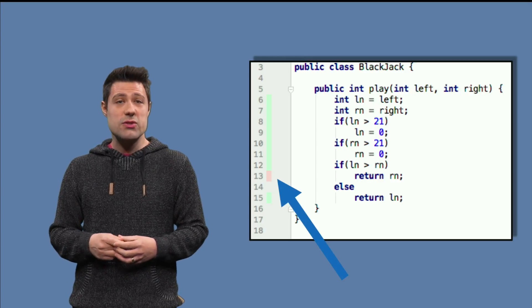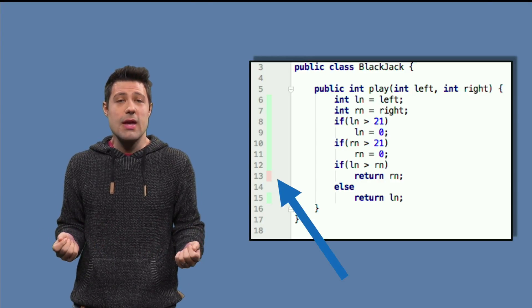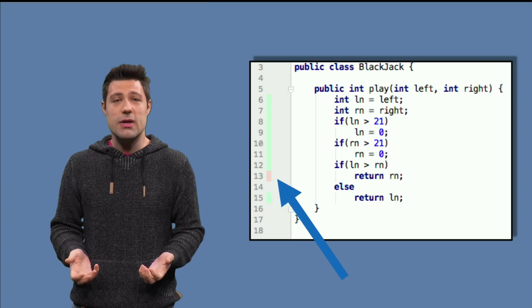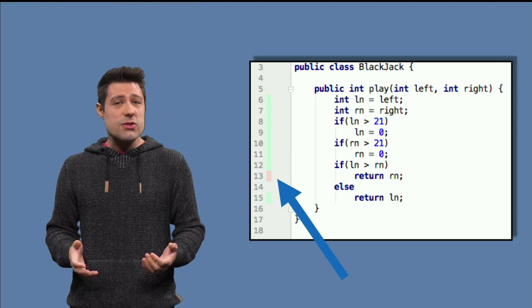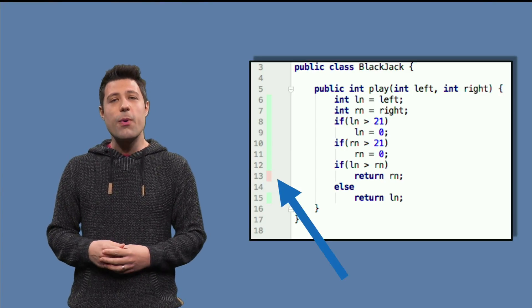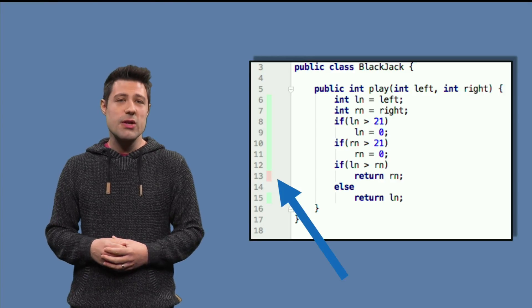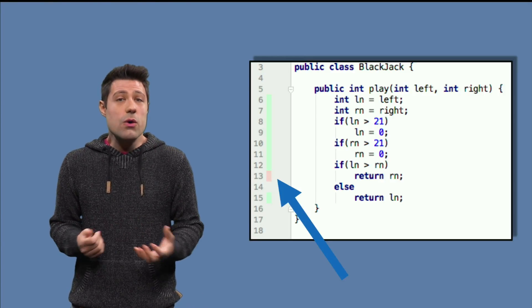This is good. This tells us what our next test should aim for. Let's then exercise this line in a new test. For this, the left player needs to have more points than the right player. For example, 10 versus 9.